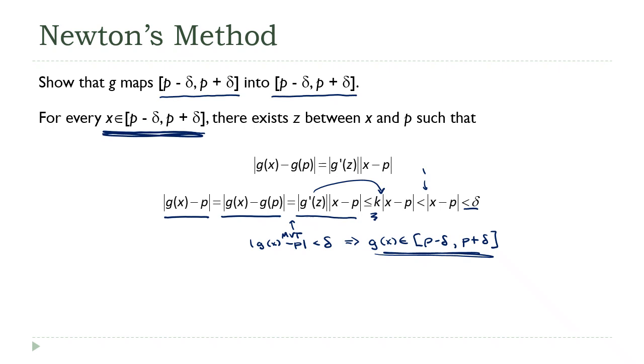So since we've shown both criteria of the theorem, the conclusion of the theorem must be true. And the theorem says that this sequence that we generate must converge to p. And remember, our initial assumption was that f(p) equals 0. In other words, p is a solution of the equation.